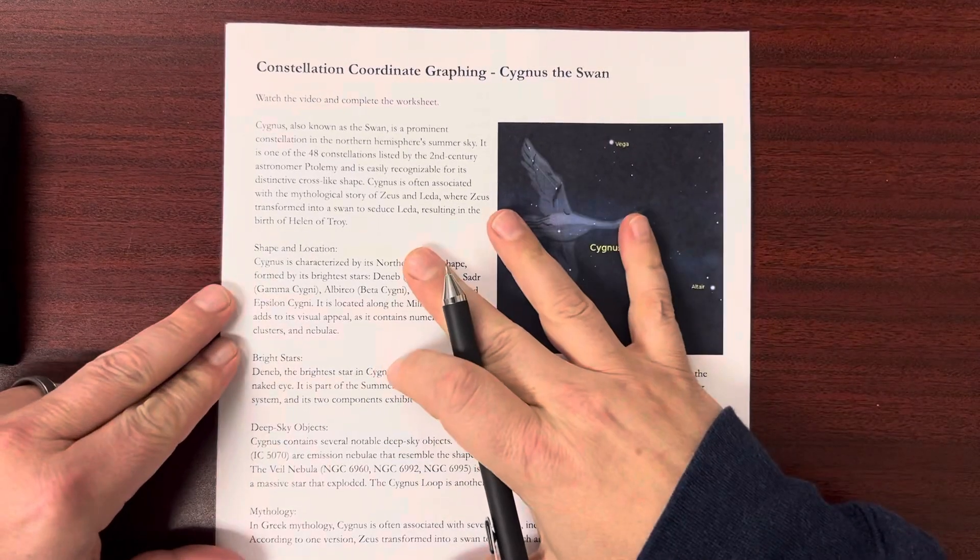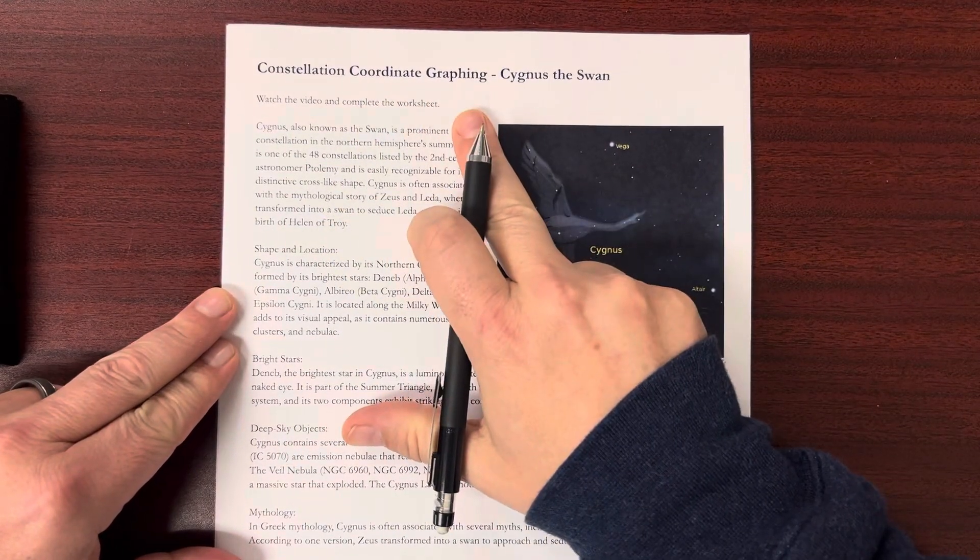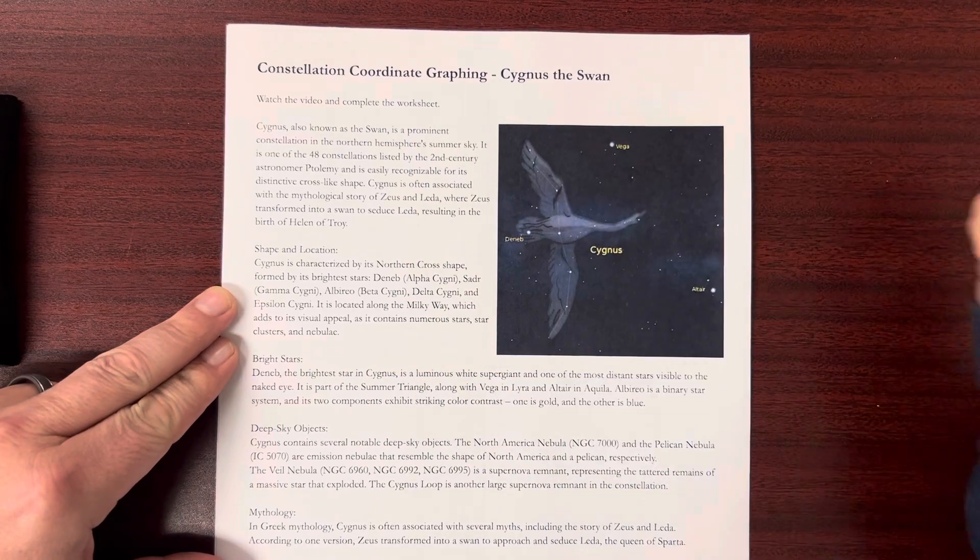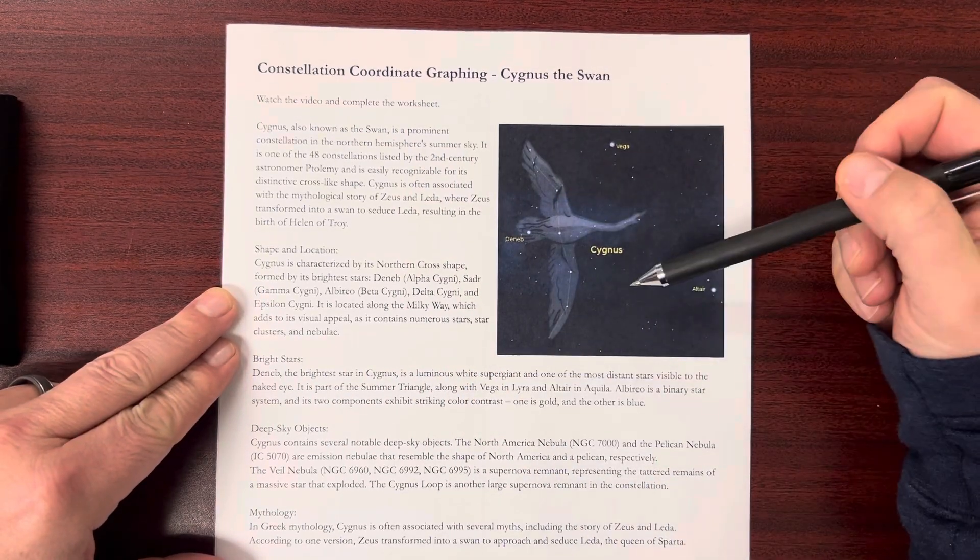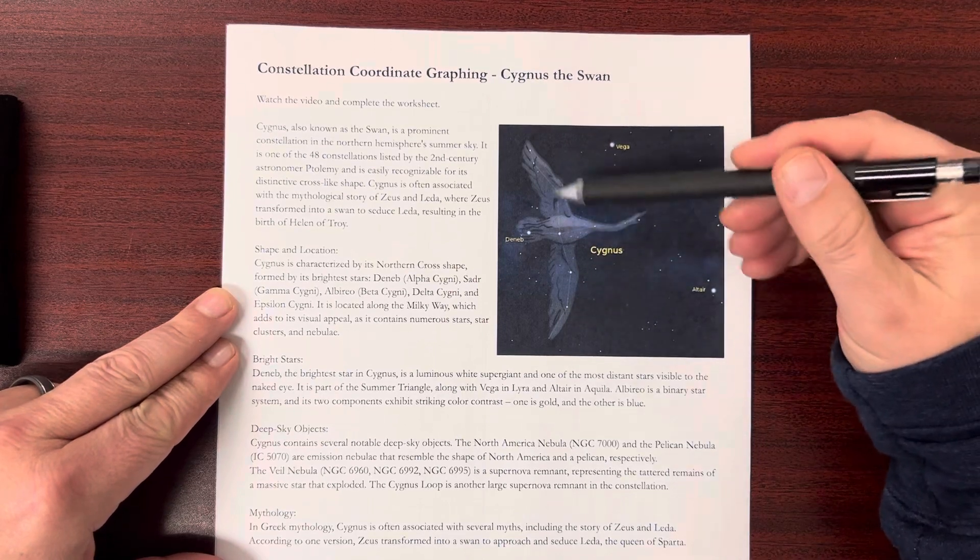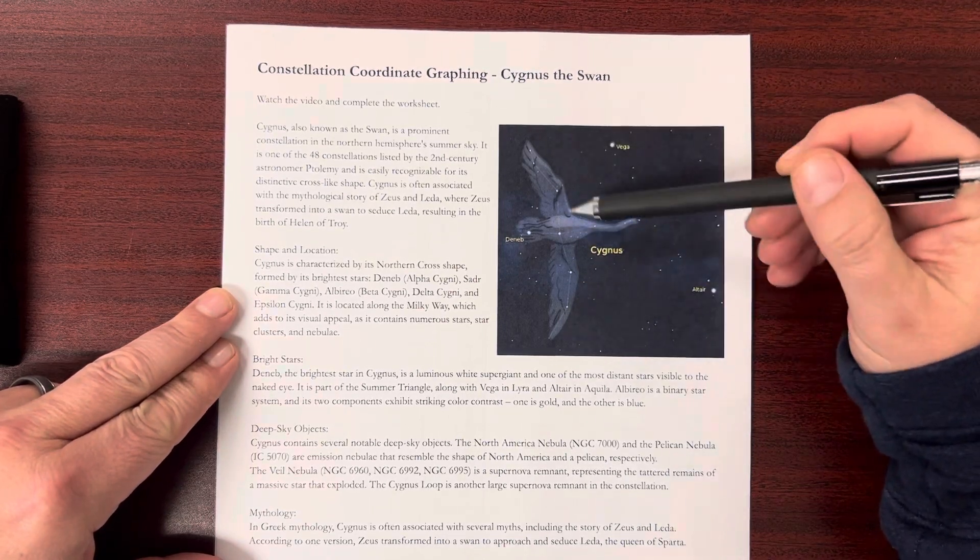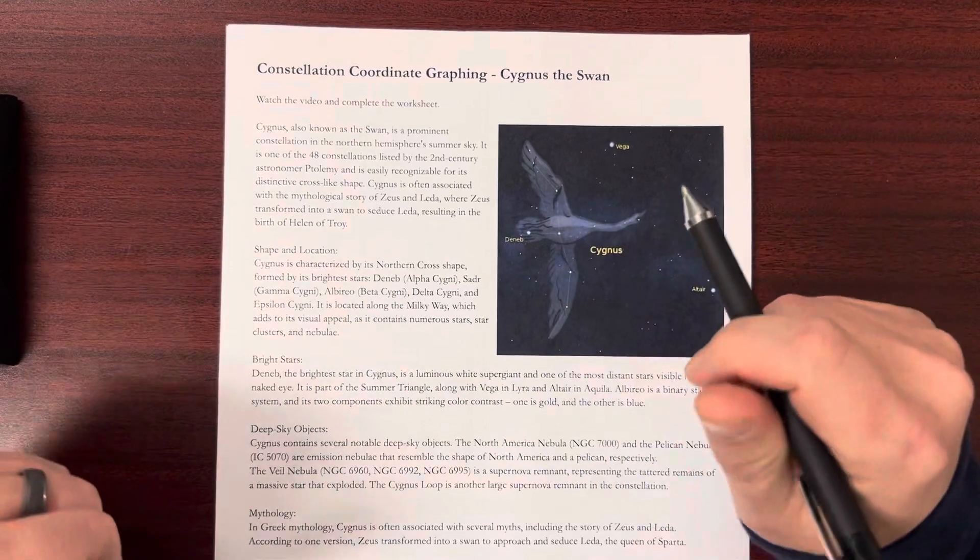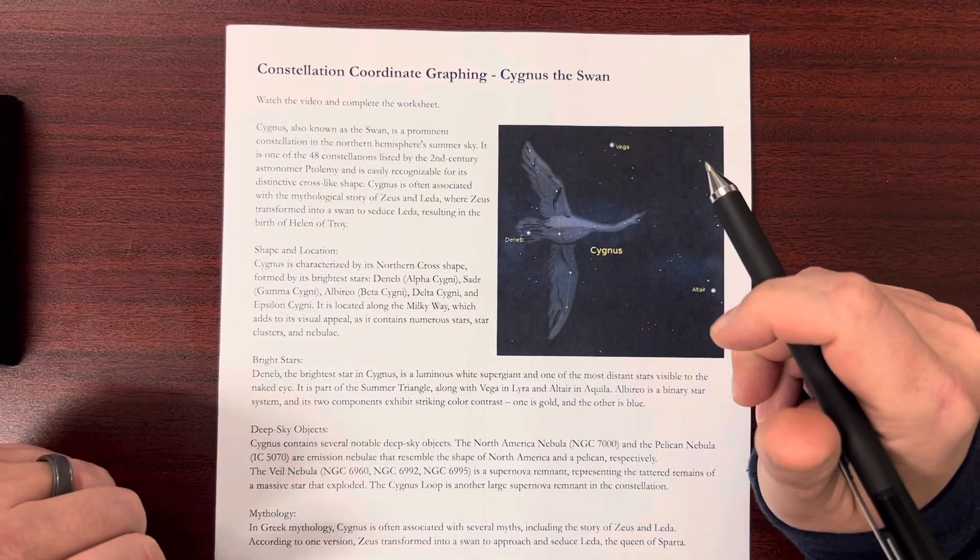Hello. Today I'm going to go over constellation coordinate graphing Cygnus the Swan. One of the constellations that you can see in the summer sky is Cygnus the Swan, and it's really large. It takes up a big portion of the sky during summer.